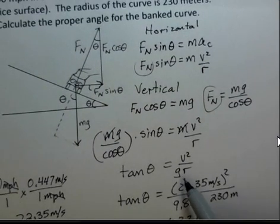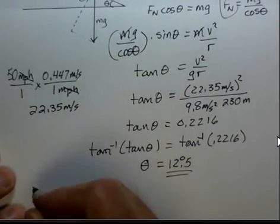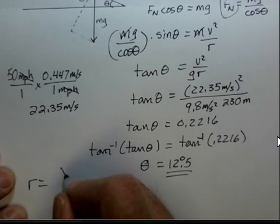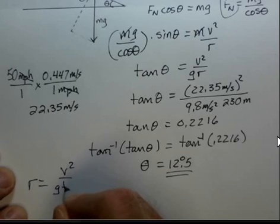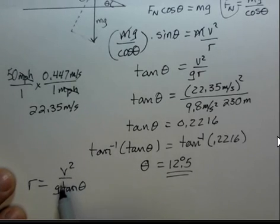Suppose the speed is higher. Well, right up here we could solve for R. And I'm going to do so. R is equal to V squared over g tangent theta.